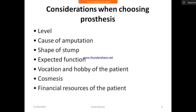Prosthesis is used to replace a missing limb, restore function, and provide cosmetic appearance. It is manufactured by the prosthetist. The replacement of a missing organ may be functional or cosmetic. Considerations when choosing a prosthesis include: level and cost of amputation, shape of stump, expected function, vocational needs, hobbies, cosmesis, and the financial resources of the patient.